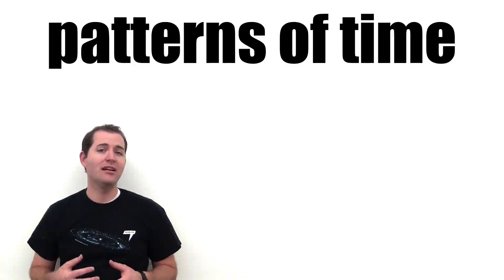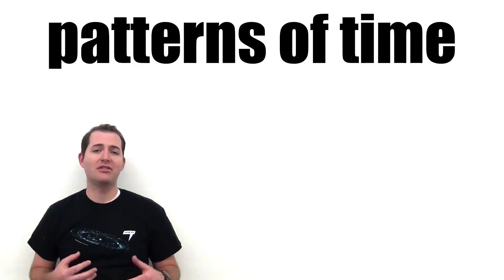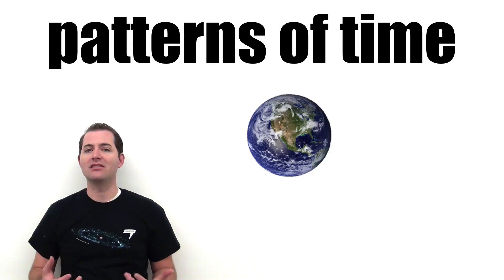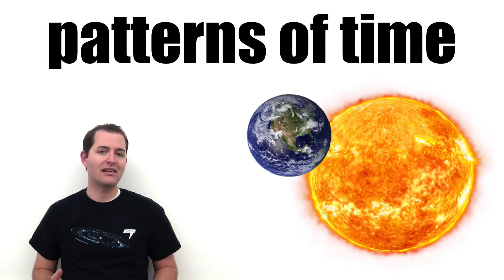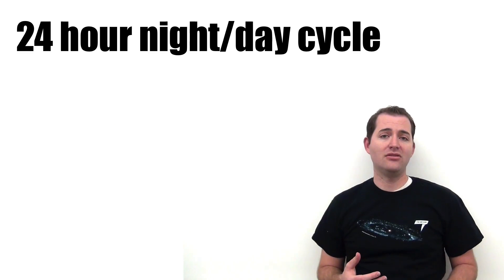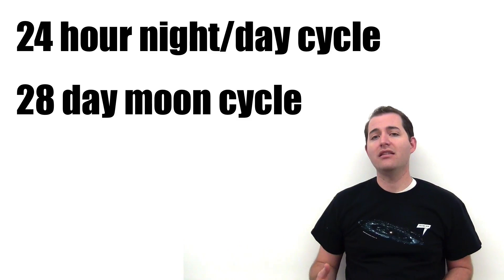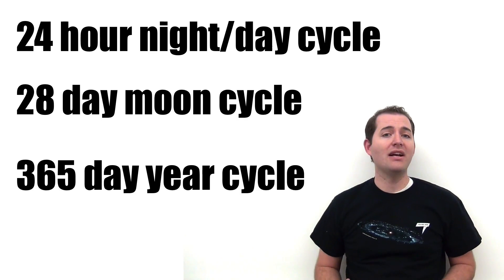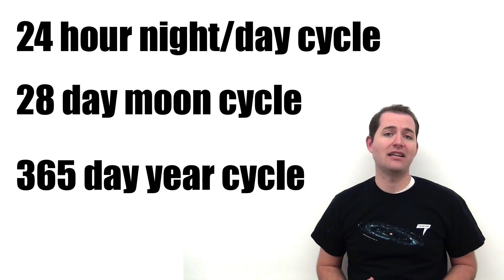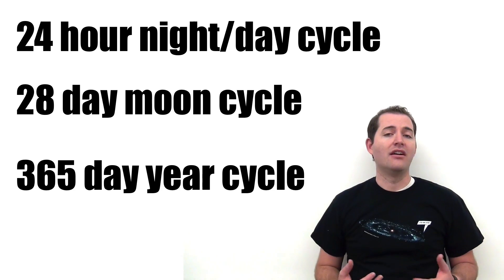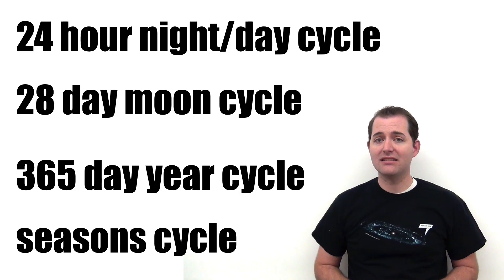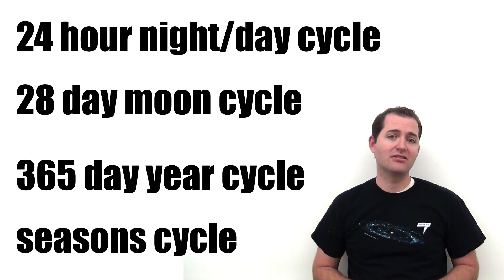There are many patterns in time on Earth which are caused by the motions of space objects such as the Earth, the Sun, and the Moon. Some of these patterns are the 24-hour night and day cycle, the month-long moon cycle, and the 365.25-day yearly cycle. Another one of these patterns is the seasons that we experience on the Earth.